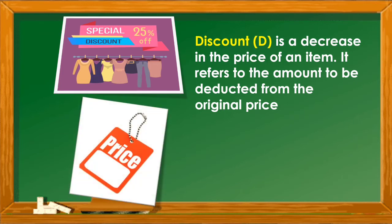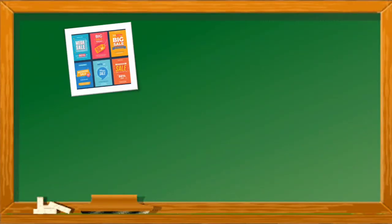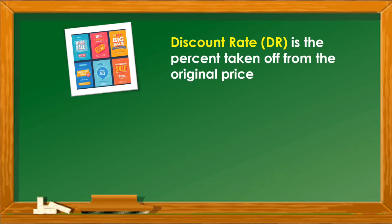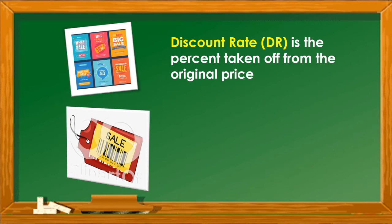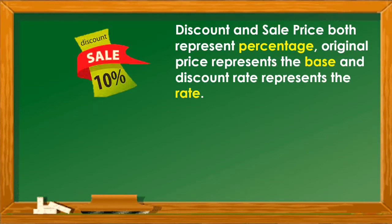How about this? Yes, we usually see this as a tag price of an item. This is the original price — it is the regular price charged for the item. This is the discount rate: the percent taken off from the original price. Sale price is the net price or discounted price — it is the price of the item after the discount has been deducted. Discount and sale price both represent percentage. Original price represents the base, and discount rate represents the rate.